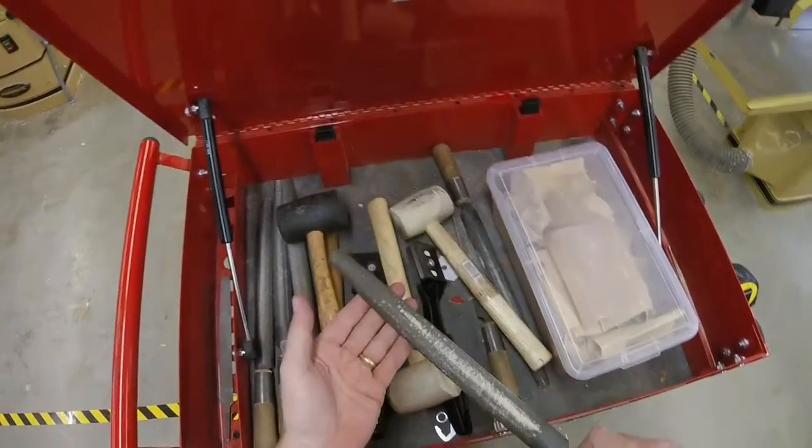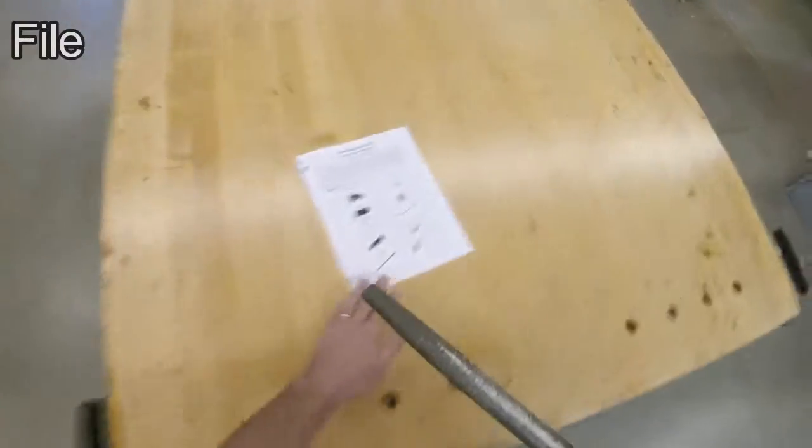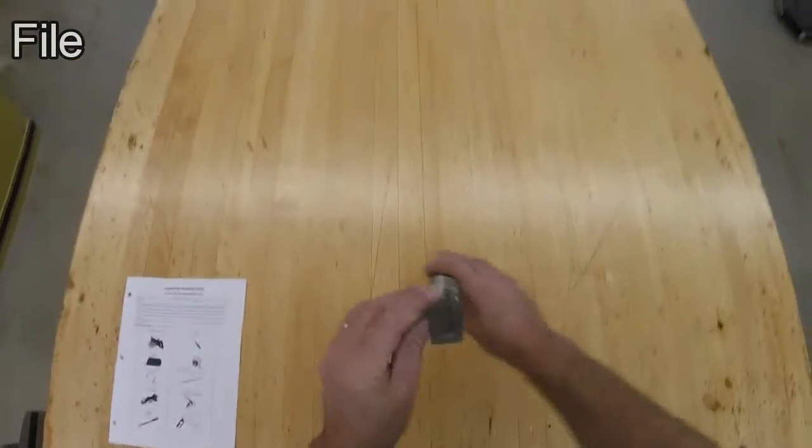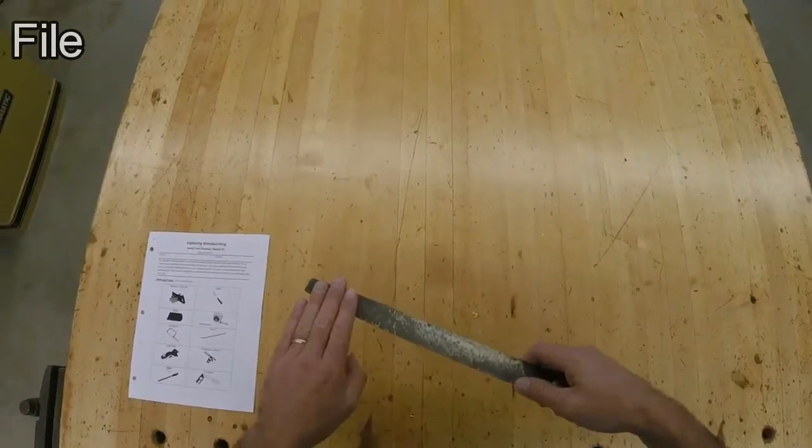The files are in the top of the cabinet, and they have two edges. The top of the file is curved for getting inside corners. The bottom of the file is flat.